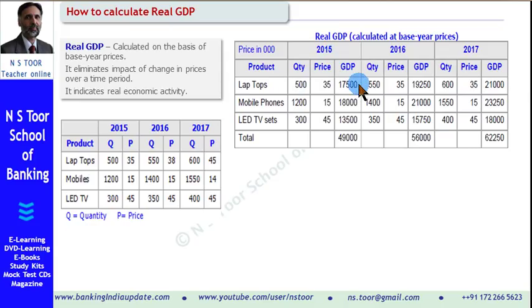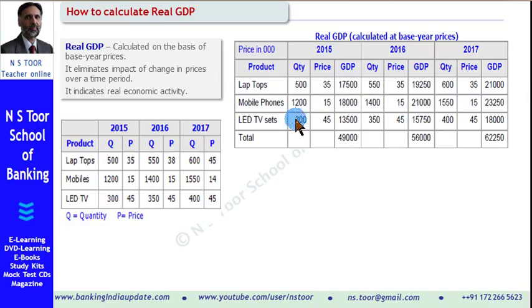Now we shall make the calculation. 500 × 35 — we get this value to be included in GDP. 1200 × 15 — we get this value to be included in GDP. 300 × 45 — we get this value to be included in GDP. And this is the GDP for 2015.